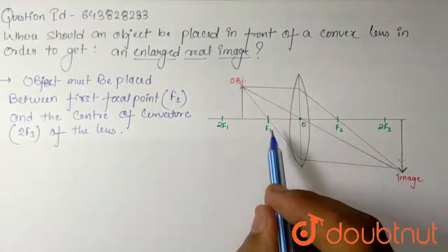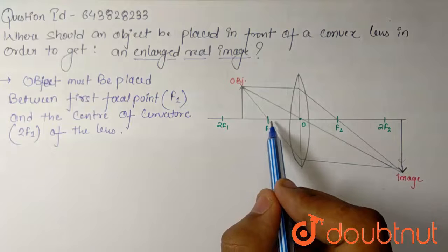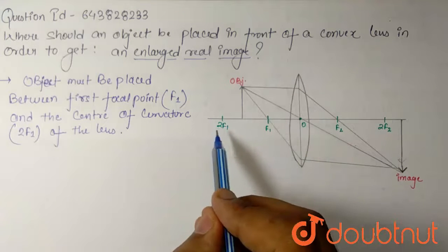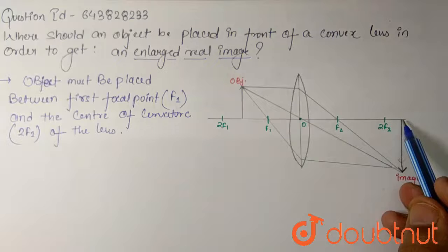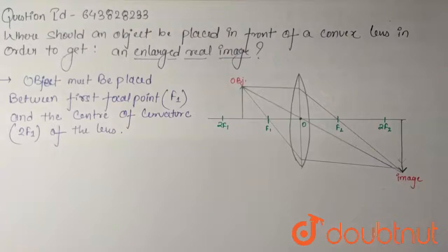Here I have made the diagram. This is the object placed between first focal point and center of curvature, f1 and 2f1. Then the image will form here - enlarged and real image. This must be the answer for this question.